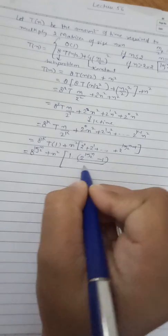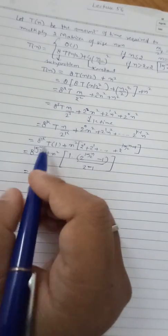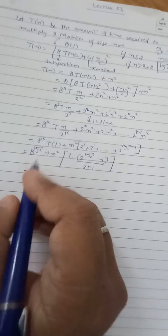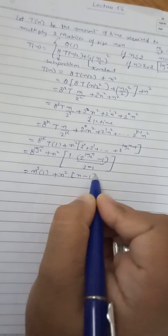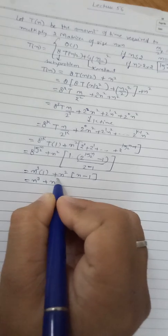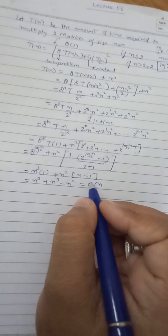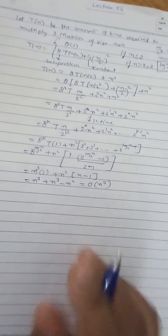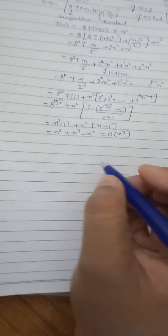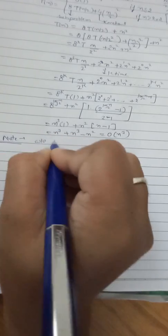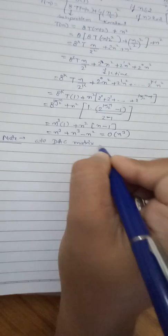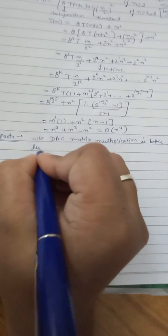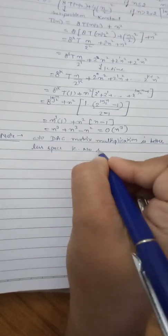Since 8 = 2³, we have 8^(log₂ n) = n³ by substitution. The full expression becomes n³ + n²·(n³ − 1)/(2−1), simplifying to n³ + n³ − n², which gives O(n³). So we can say that without divide and conquer, matrix multiplication is better in terms of space consumption.